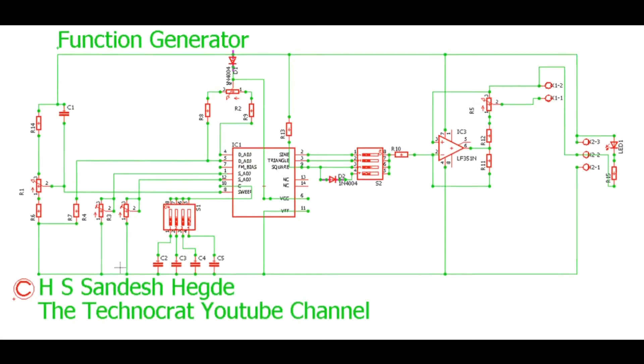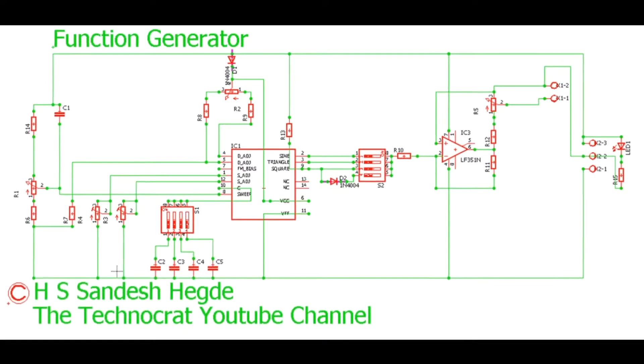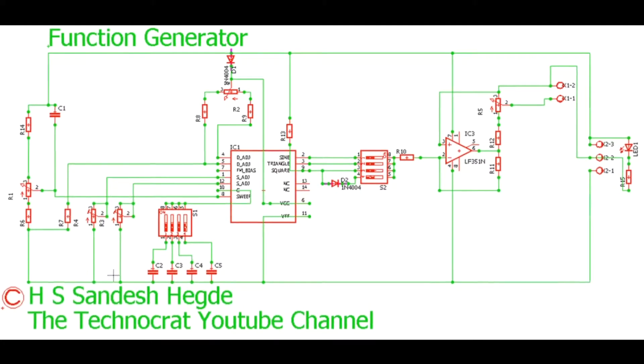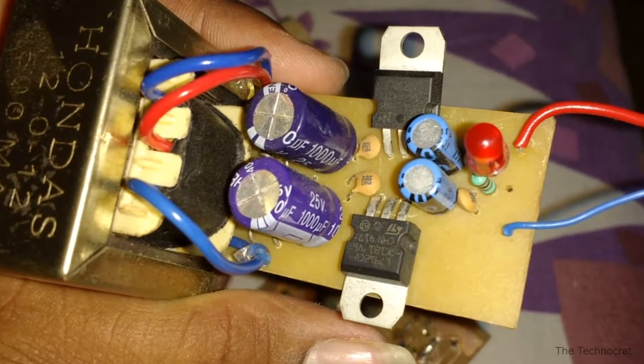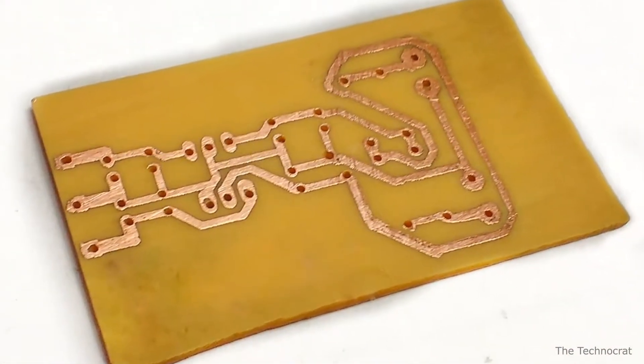Now let us start building the circuit. The Gerber files, circuit diagram, and the list of components are in the description box below. Here I am using a 12 volt DC power supply made using my homemade PCB. You can check out that video, link in the description box below.